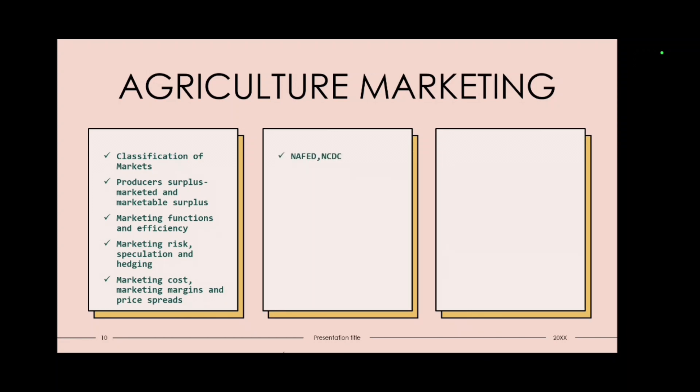Then NAFED, NCBC. These are government agencies. Then PDS system. RPDS. What is GPDS? Targeted public distribution system. Then DMI. Then comes another topic. BIS, ISO, HACCP. These are marks related to agriculture marketing. Then commodity boards in India. There are many commodity boards like tea board, coffee board. Then agriculture price policy, CACP. Then these were about agriculture marketing.